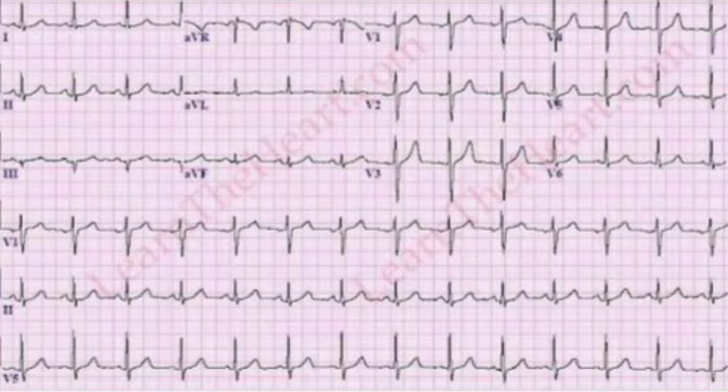Lead 3 and AVF are positively deflected leads. The purely negative deflected limb lead is AVR. This explains why some markings go up and some go down on the ECG.